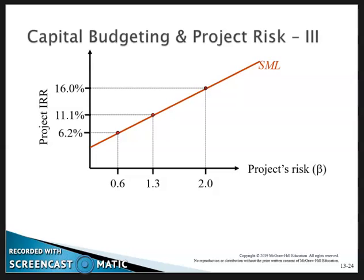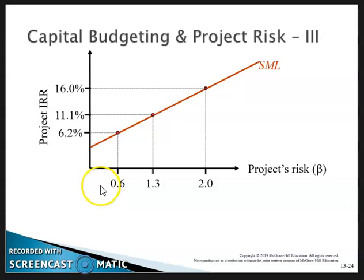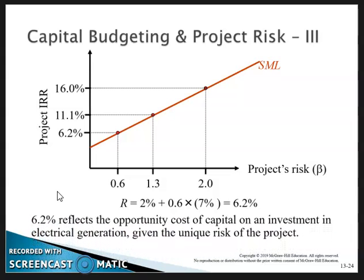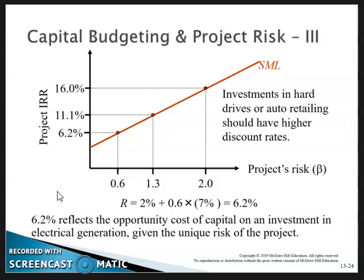Looking at the security market line relative to each type of project — automotive, hard drive manufacturing, and electrical generation — the beta and required return for electrical generation are much lower. The correct answer is to use 6.2% as the required rate of return for the electrical generation project. This 6.2% reflects the opportunity cost of capital for investment in electrical generation given the unique risk of that project. Investments in hard drives and auto retailing should have higher discount rates.